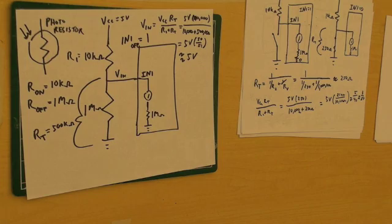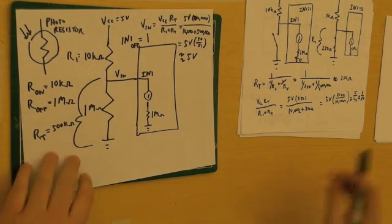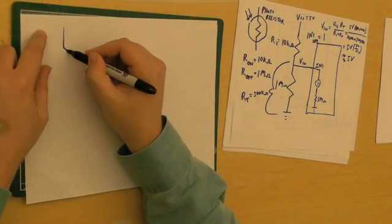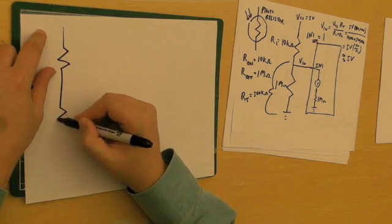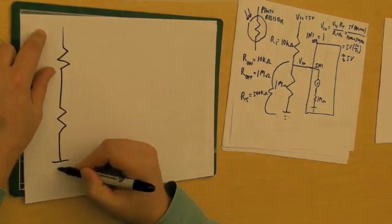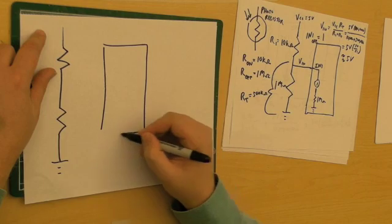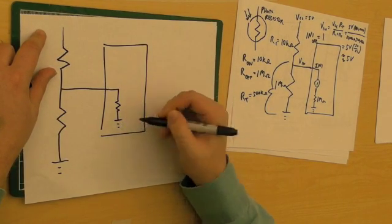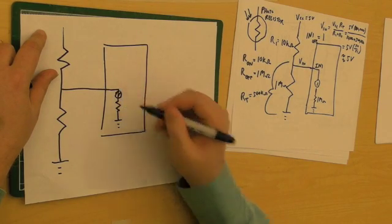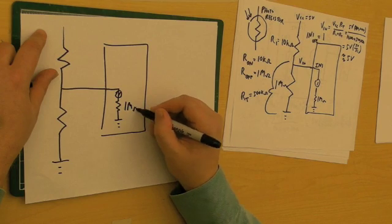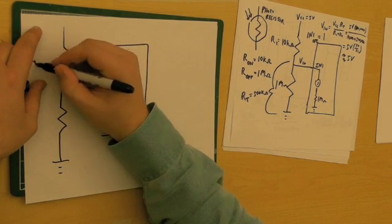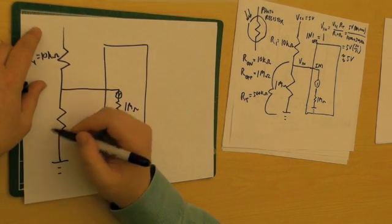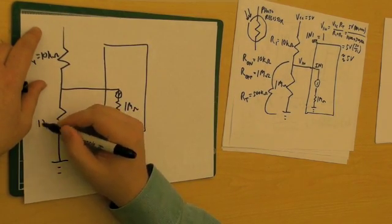Now how about when the lights are on, when R_on is 10 kilohms? I have my PIC at about 1 megohm, and R1 equals 10 kilohms.